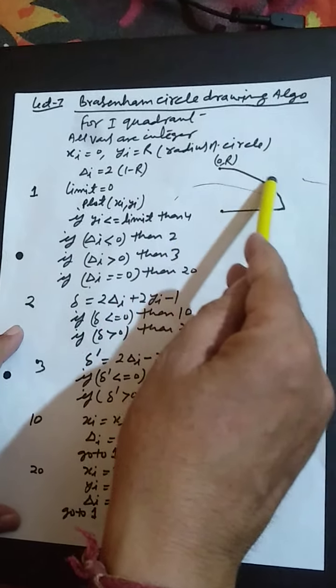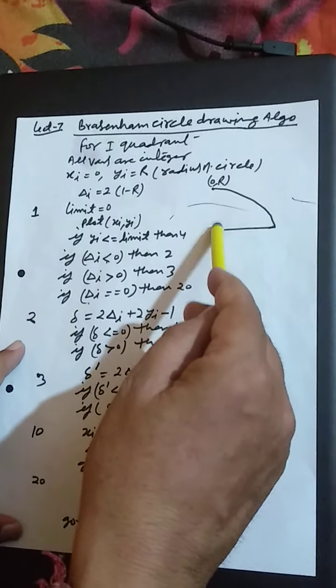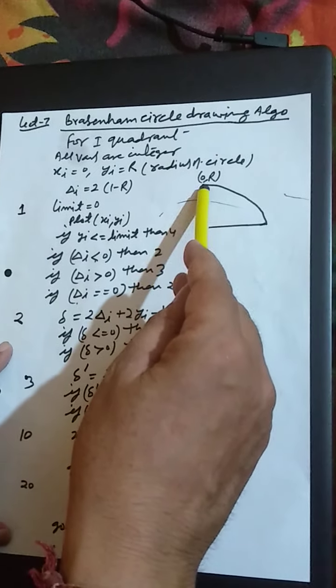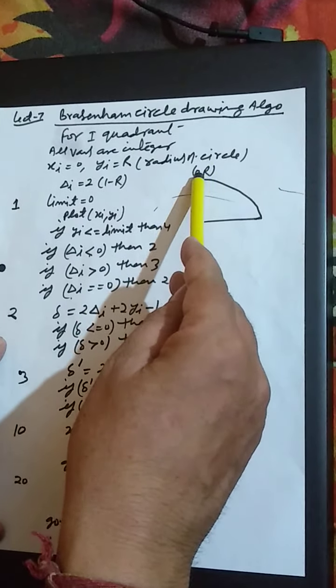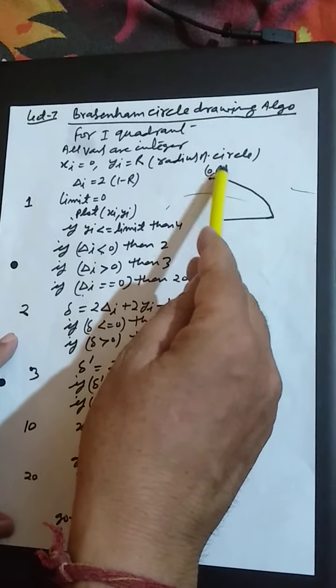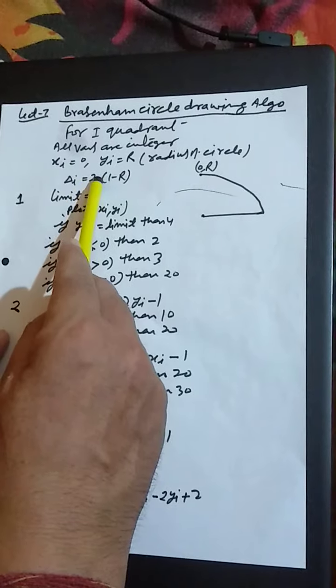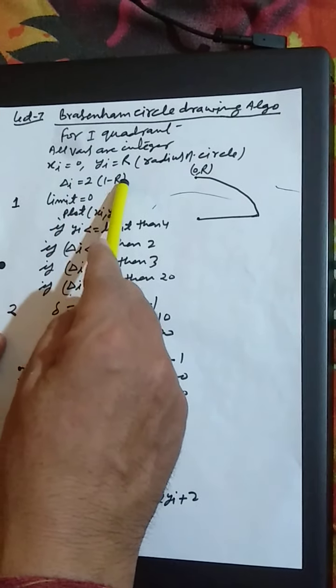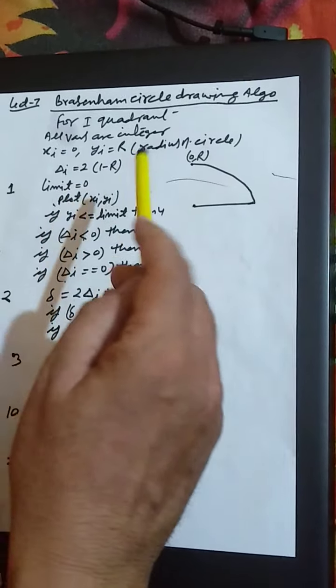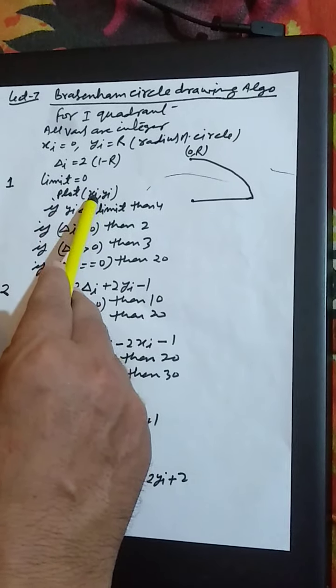As seen from this diagram, the origin is here and above it the point on the circumference of the circle is 0, r. The parameter delta i is equal to 2 into 1 minus r, limit is equal to 0, plot xi comma yi.